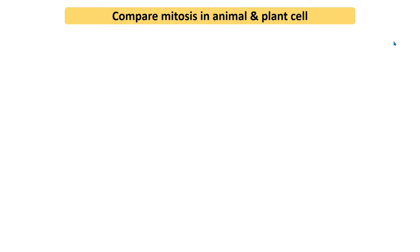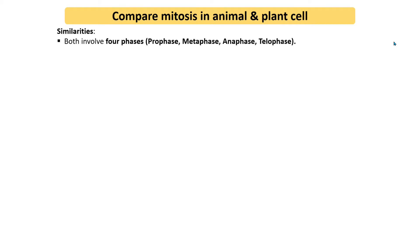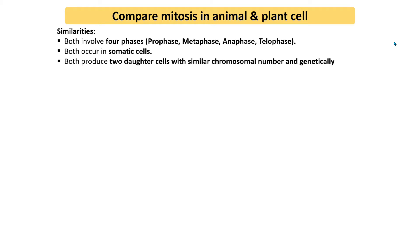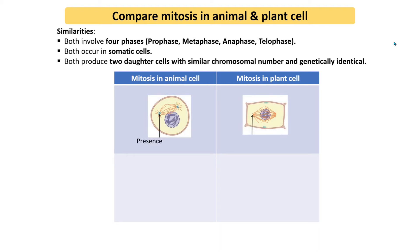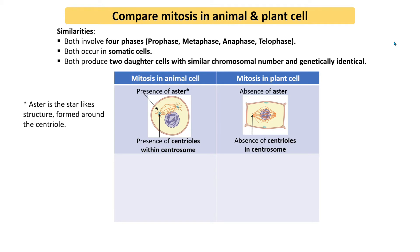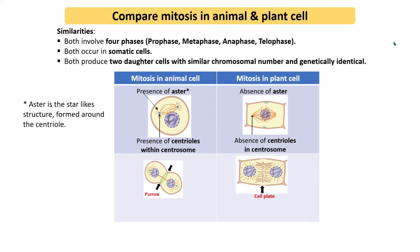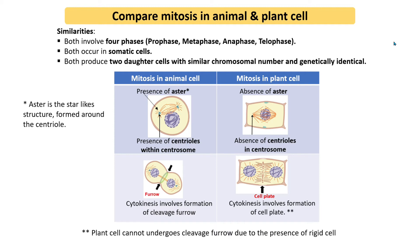There are similarities and differences between animal and plant cell mitosis. Similarities: both involve four phases — prophase, metaphase, anaphase, and telophase; both occur in somatic cells; and both produce two daughter cells with the same chromosomal number that are genetically identical. Differences: animal cell mitosis involves centrioles within the centrosome and asters, both absent in plant cells. Cytokinesis in animal cells involves a cleavage furrow, while in plant cells it involves a cell plate. Plant cells cannot undergo cleavage furrow formation due to their rigid cell wall.